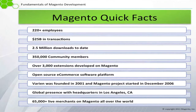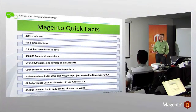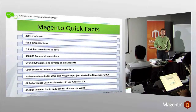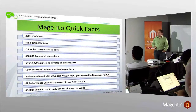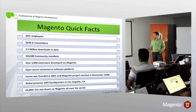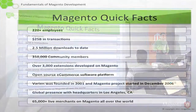Some quick facts about Magento: I can't actually keep the slide updated enough — Magento is growing and growing. Over 200 employees, well over 25 billion in transactions, millions and millions of downloads. The community is large and vocal. Magento started out as Varian and has since become Magento Incorporated. And we're right here at the global headquarters in Los Angeles.